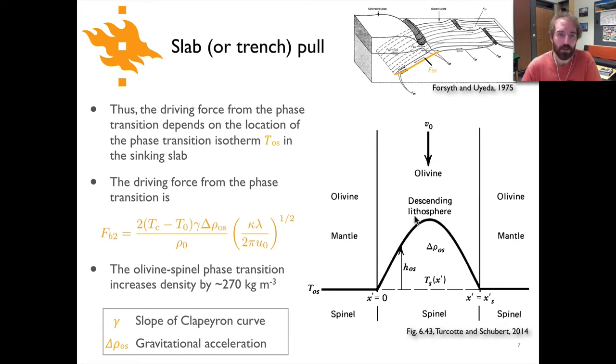This isotherm TOS is the temperature for the phase transition. You can see here then that there's this region where you've transitioned already to the more dense phase that's not present on either side in the asthenosphere, and so that's the source of the force.